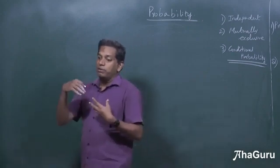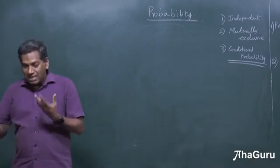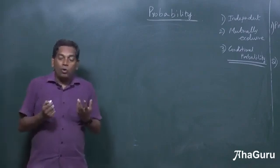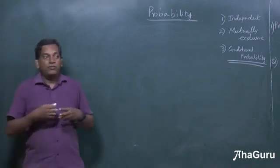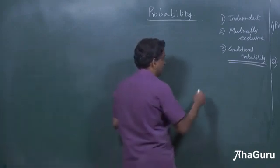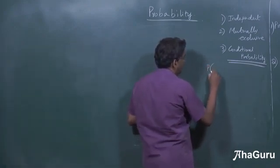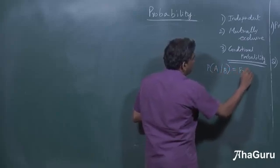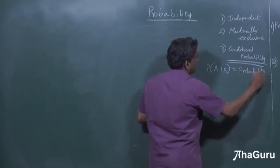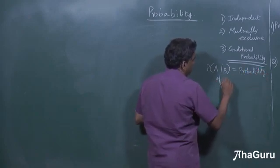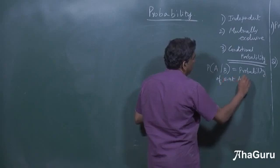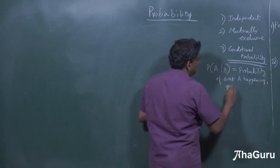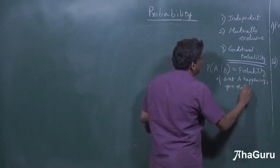Conditional means the probability of one depends on the other as a number. So, how do we find probability of two events happening? So, the correct way to write, so we say P of A given B is probability of event A happening given that B happens.